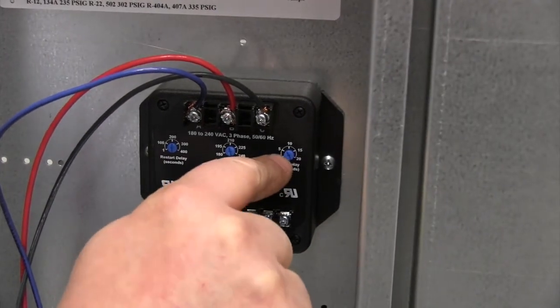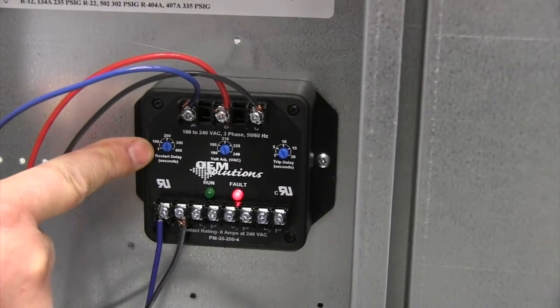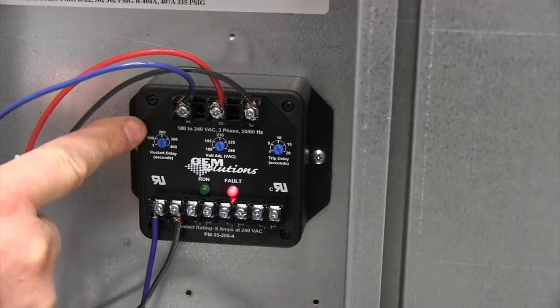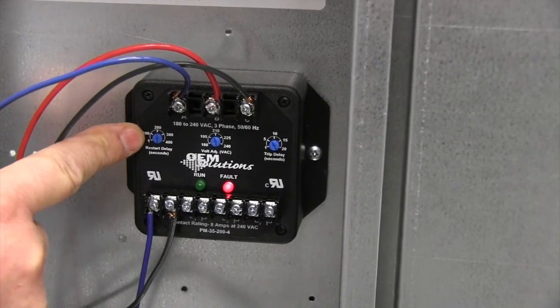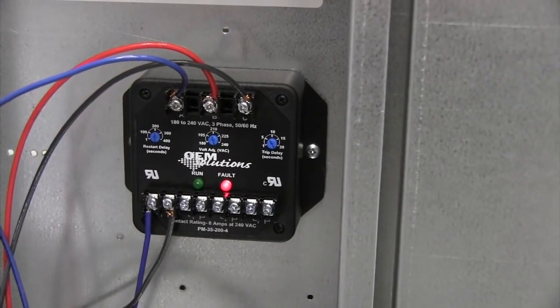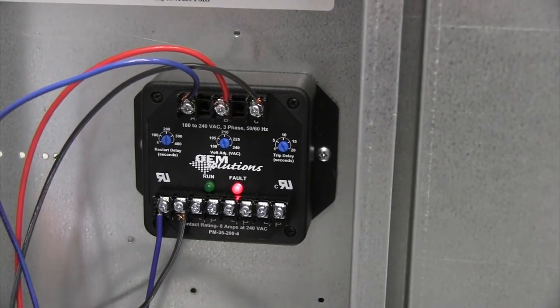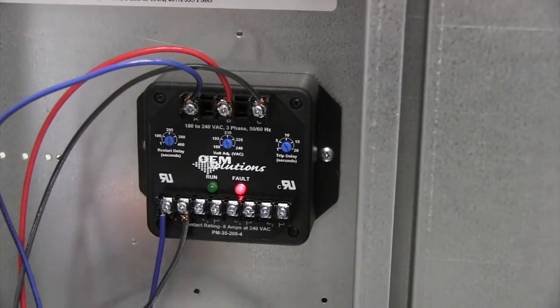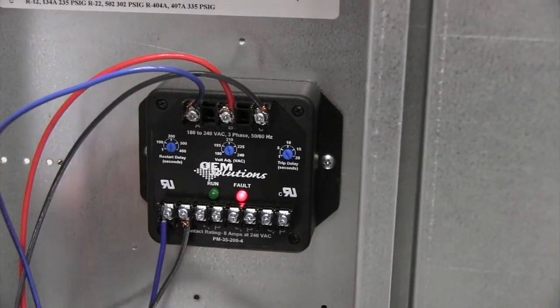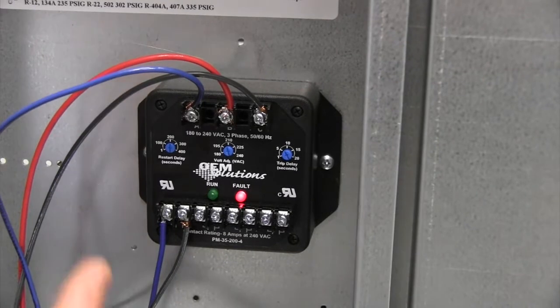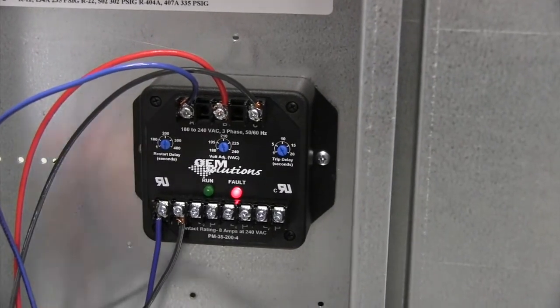This should be set to seven seconds. The third set point is your restart delay. The restart delay should be adjusted to the 200 mark, 200 seconds, which means that when you energize the compressor unit, the time delay is going to count down those 200 seconds until it's going to energize the compressor. So you will see the fault light on when you apply power initially until the restart time delay times out, and then it'll go into run mode.